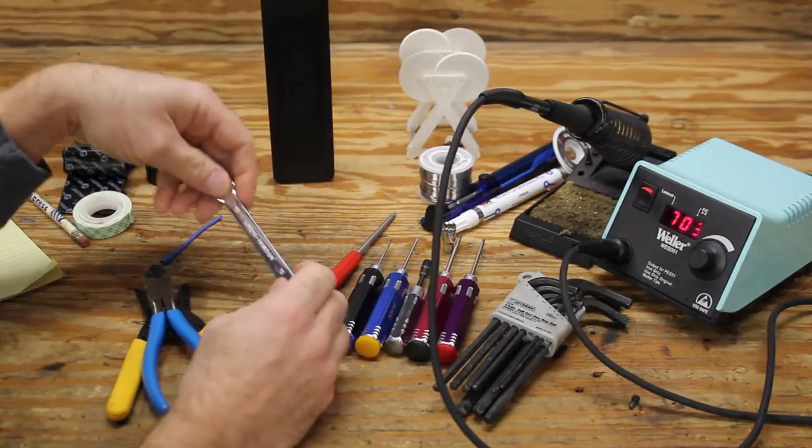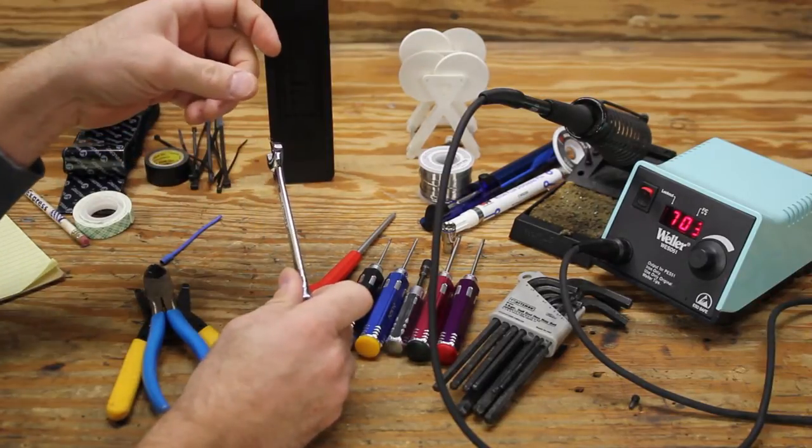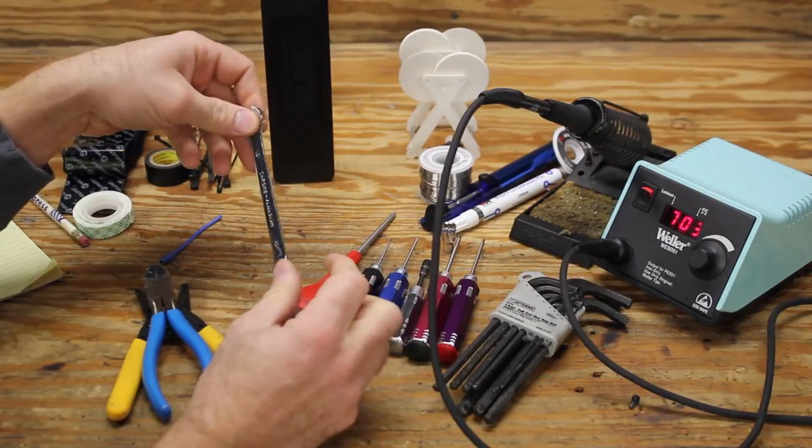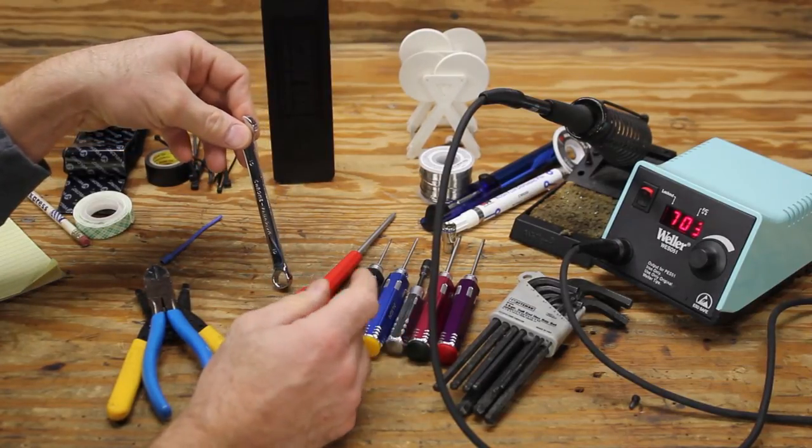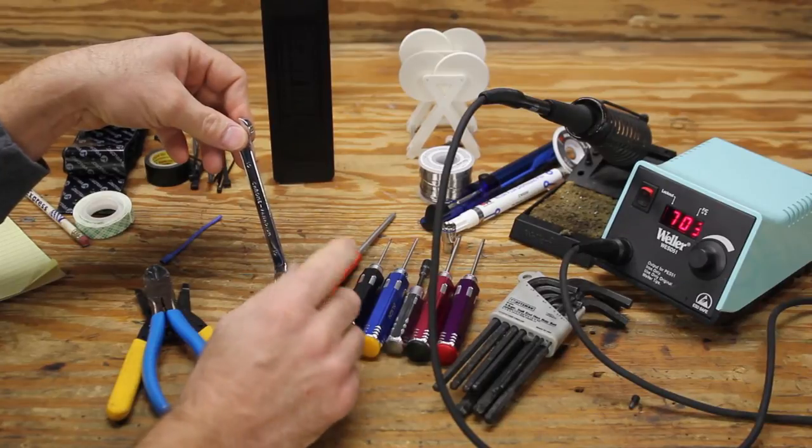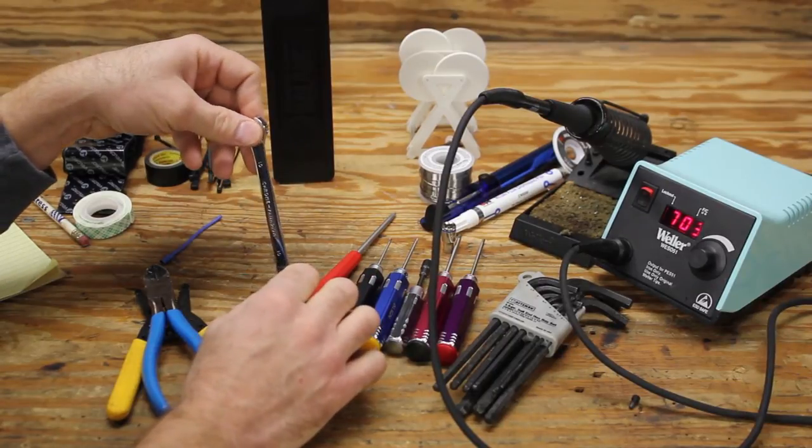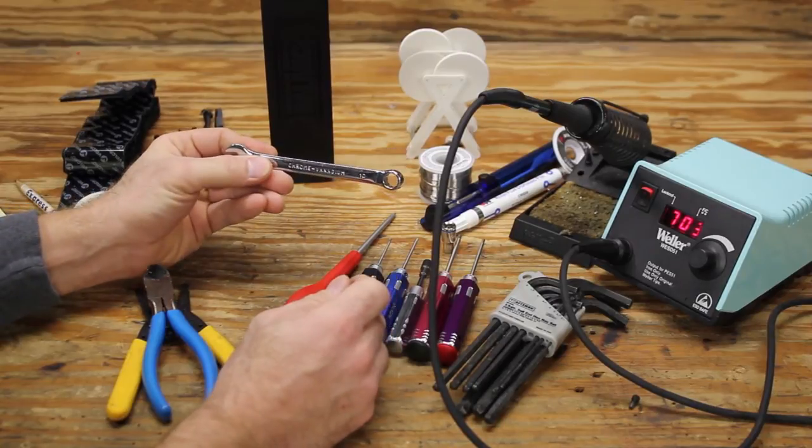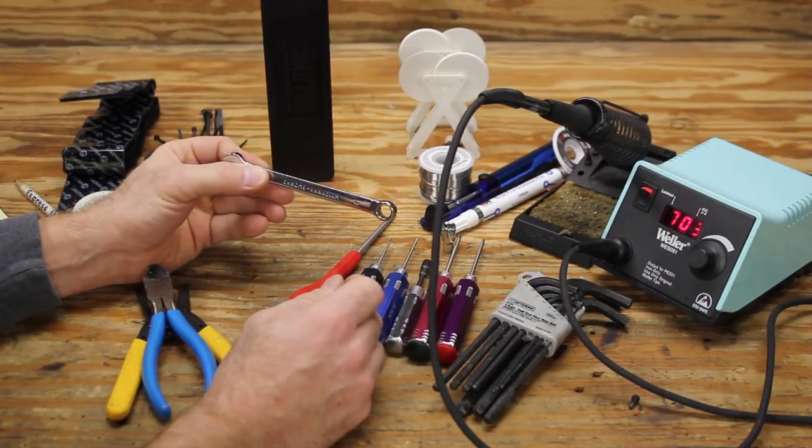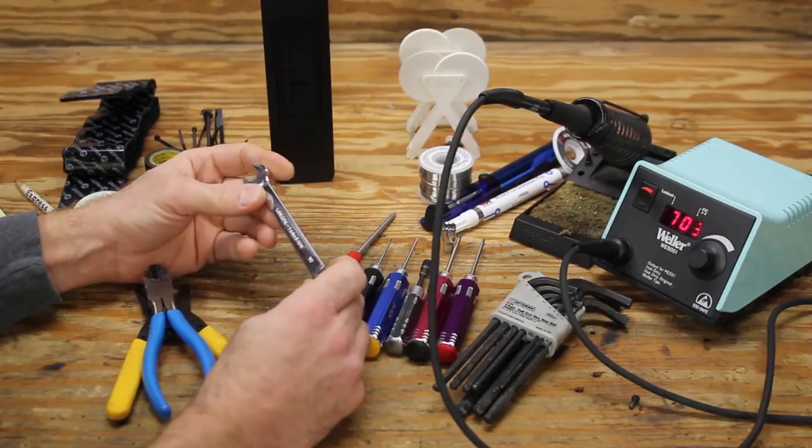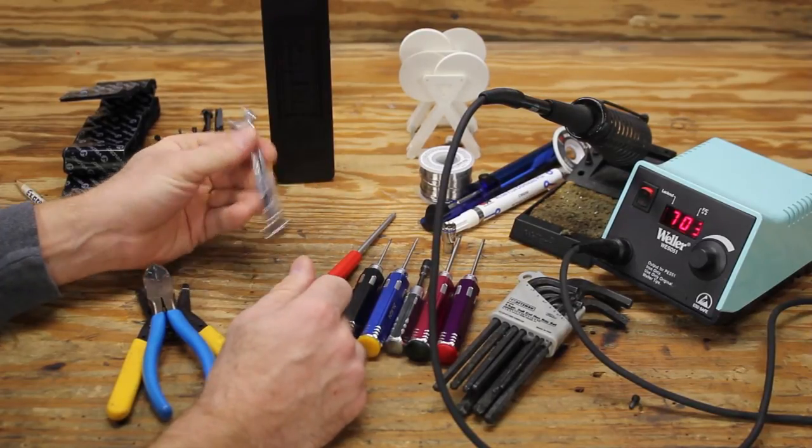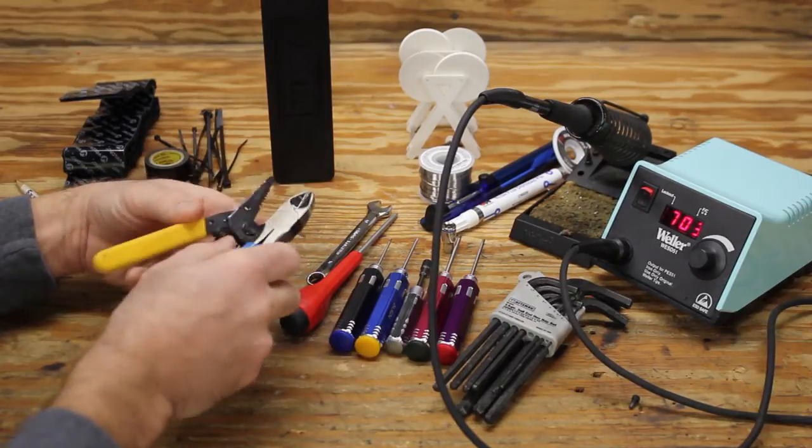Also for putting the nuts onto the prop shafts to hold your propellers in place, a lot of times they just have either a hex nut or a hex nut with a cone on top, kind of like a little aerodynamic looking thing, like a spinner. And so a combination wrench for the size nuts that you have holding the propellers on. I think in England they call these spanners, right?